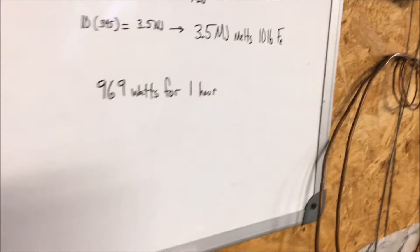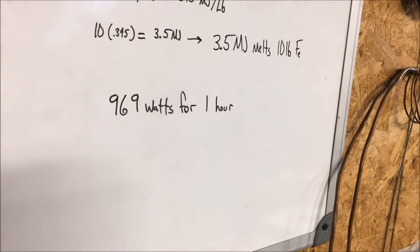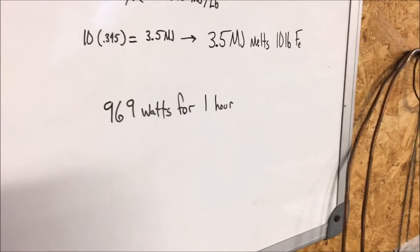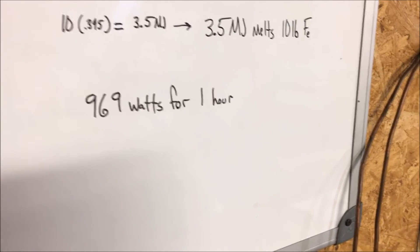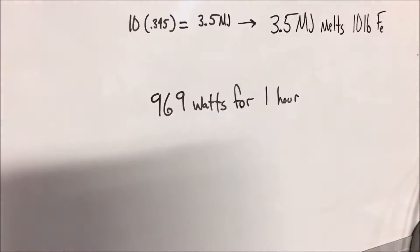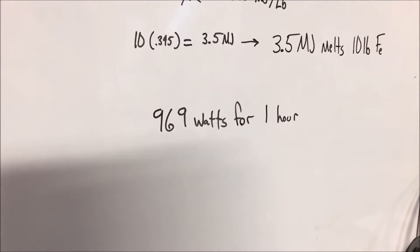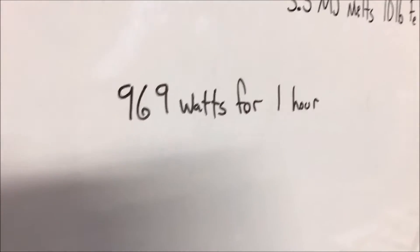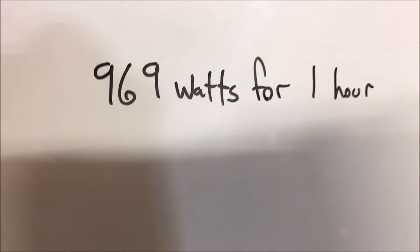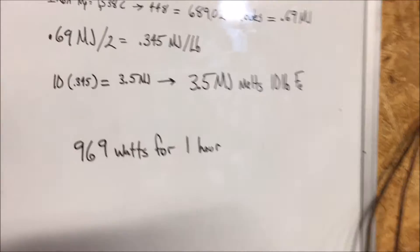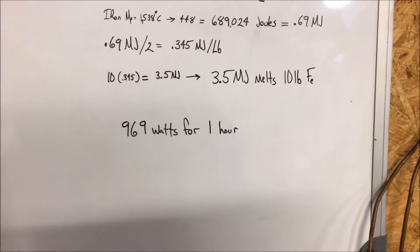I've seen crucibles made out of stove top elements that can do some pretty impressive things if they're completely contained. They've got to be completely contained in vermiculite or some other extremely good insulating refractory. But there you have it. That is the apparent theoretical minimum input for one hour to give us that 3.5 megajoules to melt that iron.